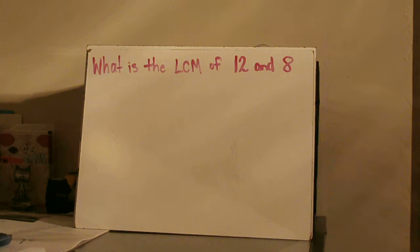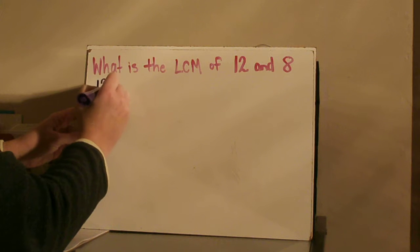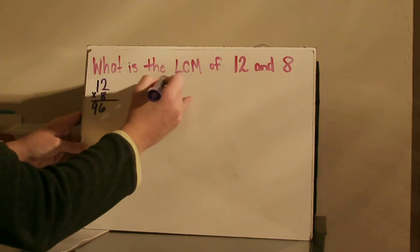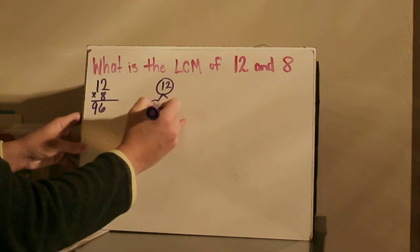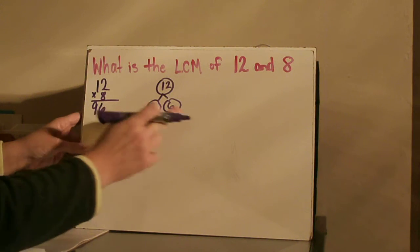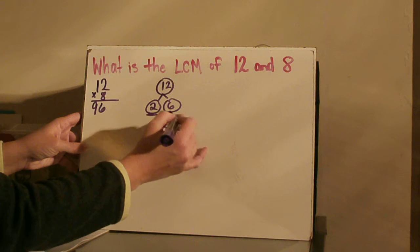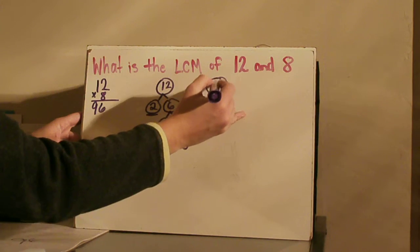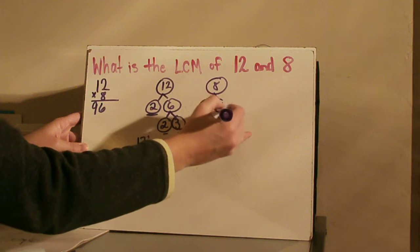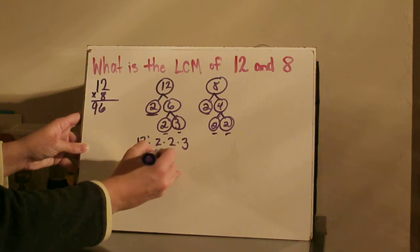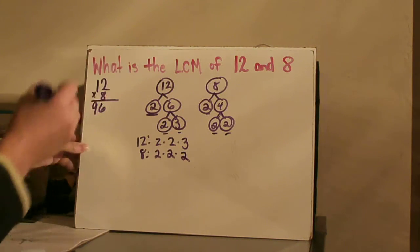Let's do another example. What is the LCM of 12 and 8? Step one: find the product of 12 and 8, which is 96. Then I want to find my GCF. So 12 is 2 times 6; I stop at the 2 because it's prime, and 6 is 2 times 3. So for 12, the prime factors are 2 times 2 times 3. Then I do my factor tree for 8: 2 times 4, and 4 is 2 times 2.